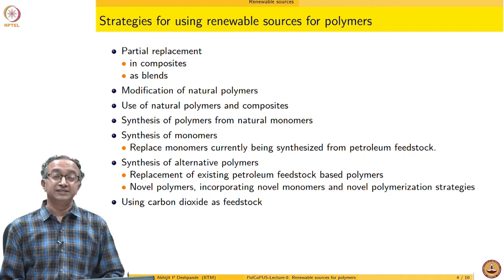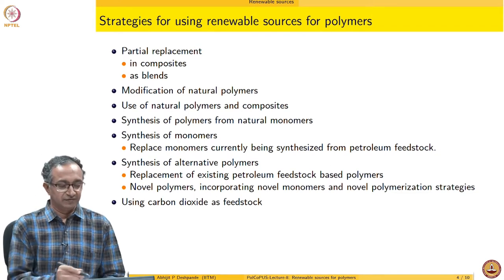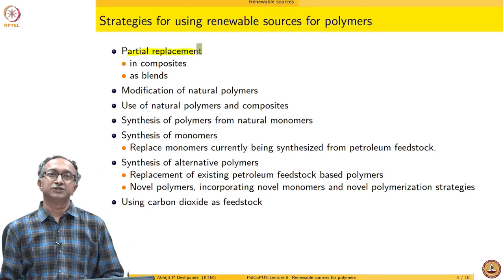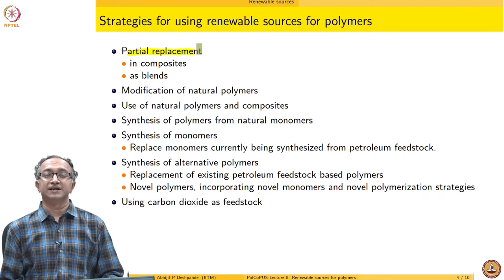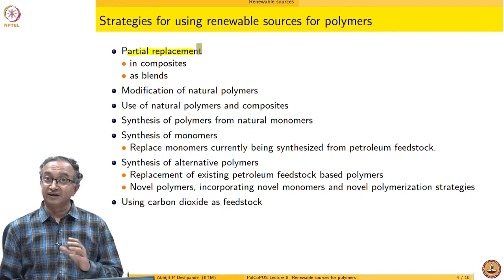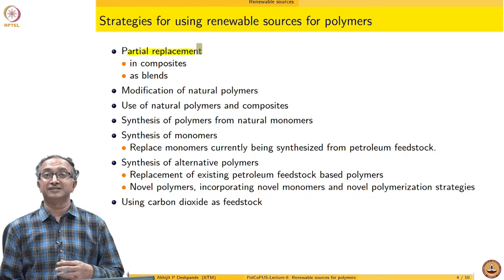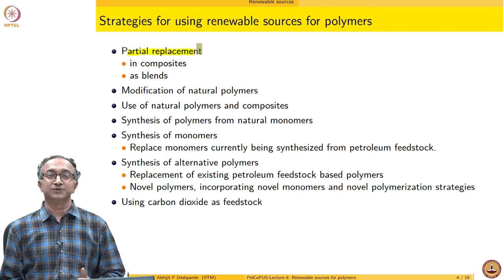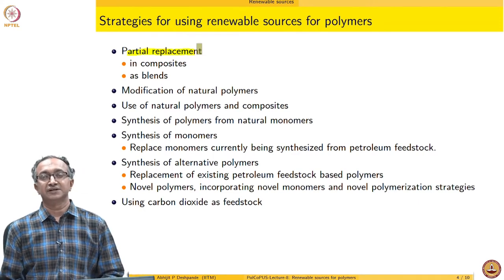The first thing — which is easy to do and already being done to quite an extent — is partial replacement. Instead of using a polyethylene material, we can use a mixture of polyethylene and starch. Up to 30–40 percent starch can be incorporated in polyethylene, so you can say that the amount of plastic waste you have to deal with is only 60 percent, while 40 percent may be biodegradable. There are issues with this, because if starch is embedded in polyethylene, it may not be as biodegradable as pure starch.